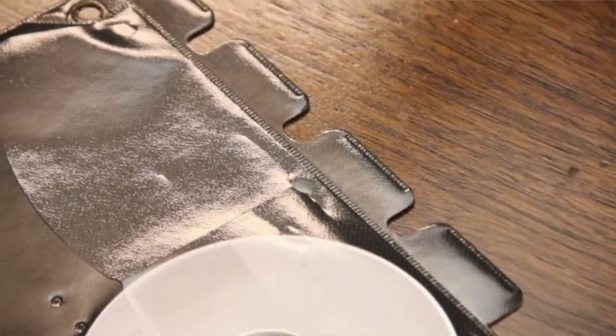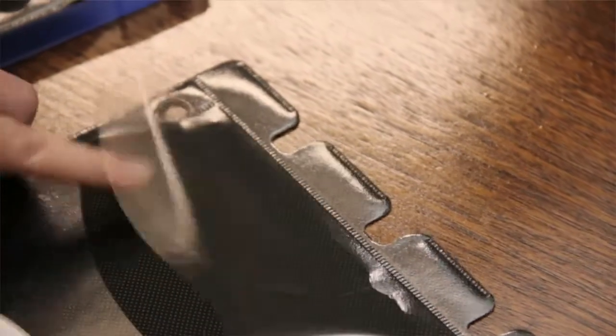Binders include disc pages that are tabbed for easy indexing and are made with safety sleeve material that protects your discs from dirt and debris.